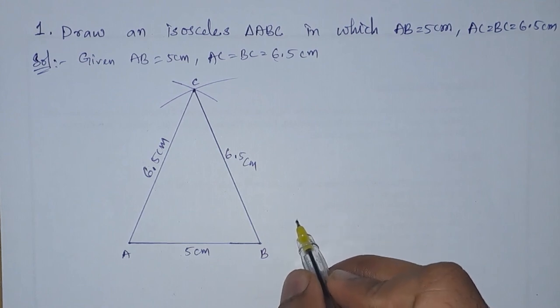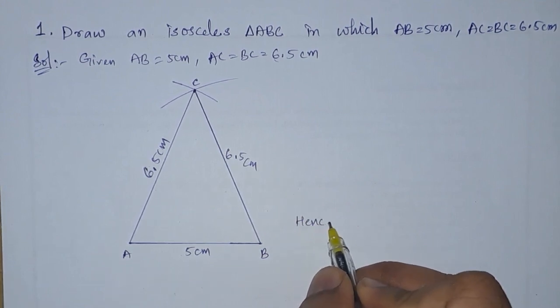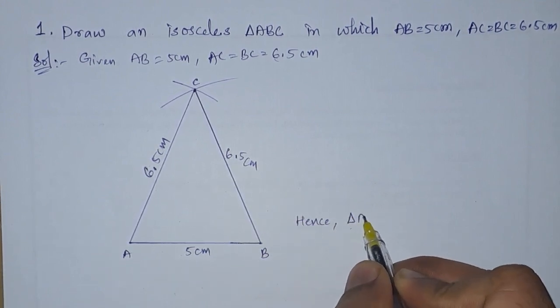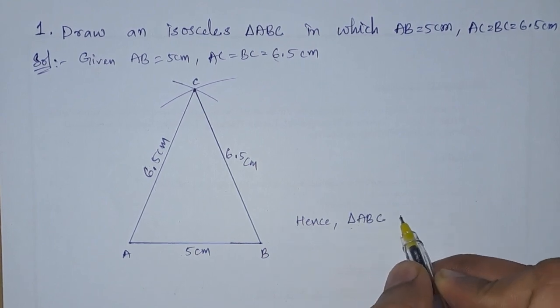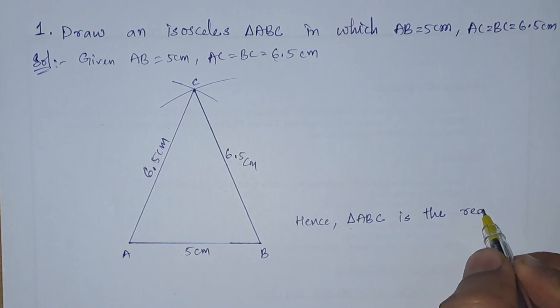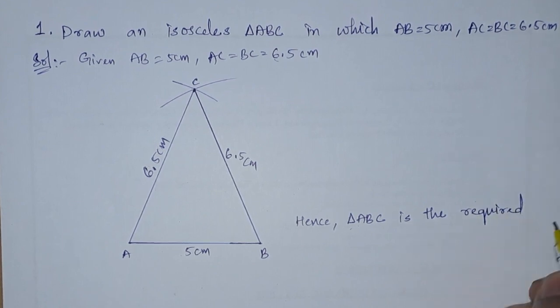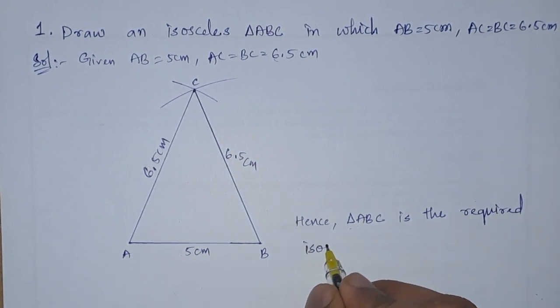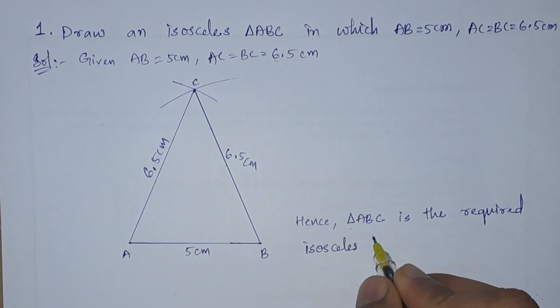Hence, triangle ABC is the required isosceles triangle.